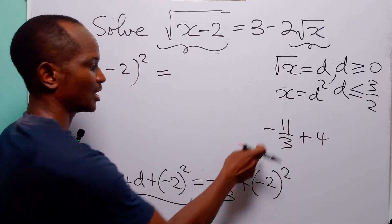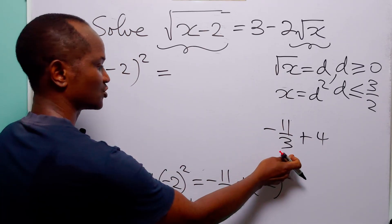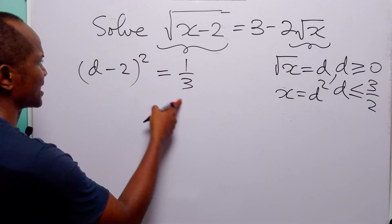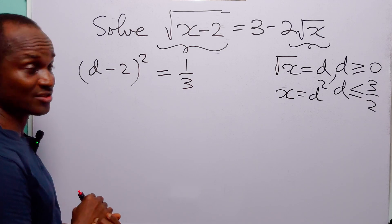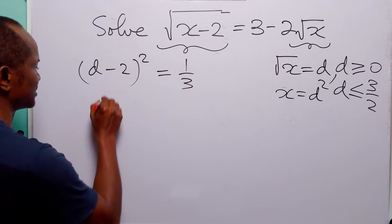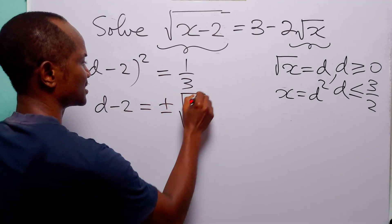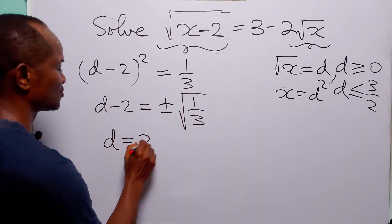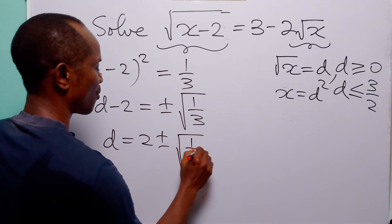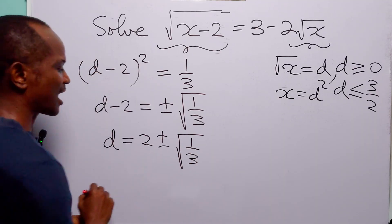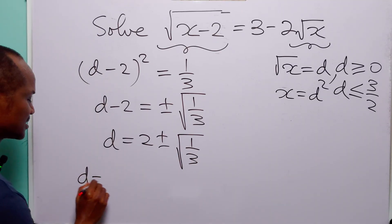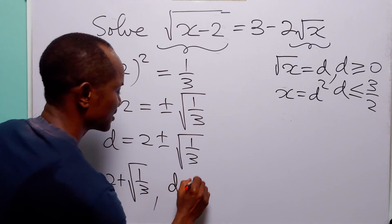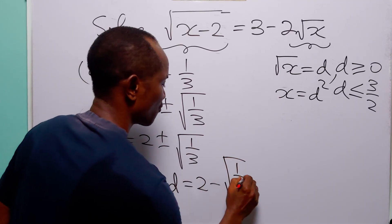3 times 4 is 12, and 12 minus 11 is 1, so we have 1 over 3 on the right-hand side. The next thing we are going to do is take the square root of both sides. When we do that, we have that d minus 2 is equal to plus or minus the square root of 1 over 3. From here, we have that d is equal to 2 plus or minus the square root of 1 over 3. So now we have two values for d.